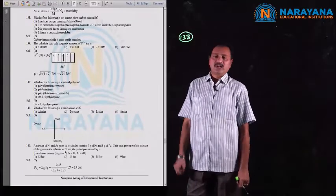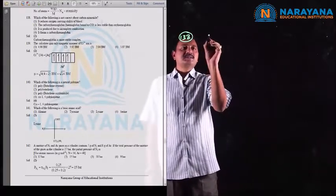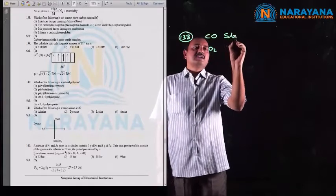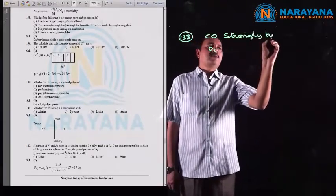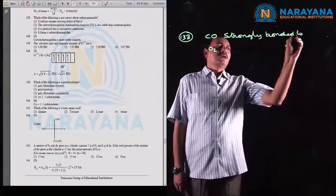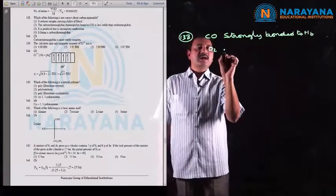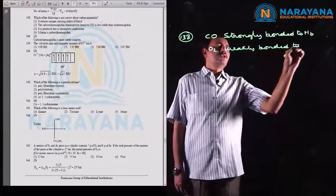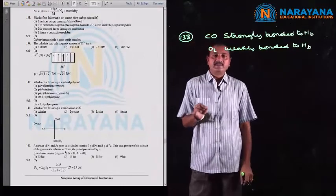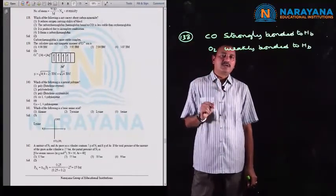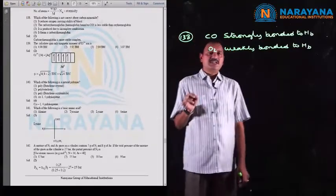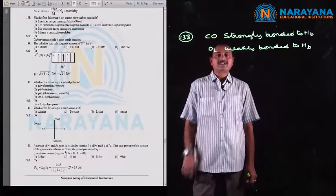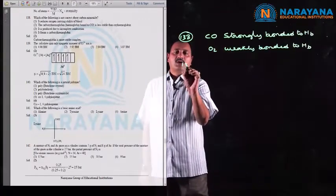Next, question number 138: which of the following is not correct about carbon monoxide? Carbon monoxide is strongly bonded to hemoglobin, whereas oxygen is weakly bonded to hemoglobin, so carboxy hemoglobin is more stable than oxy hemoglobin. Option 2 states carboxy hemoglobin is less stable than oxy hemoglobin — this is the wrong statement, so the correct option is the second option.